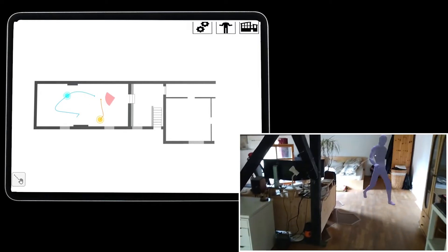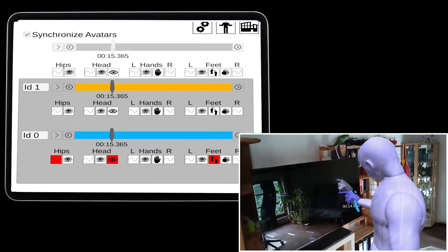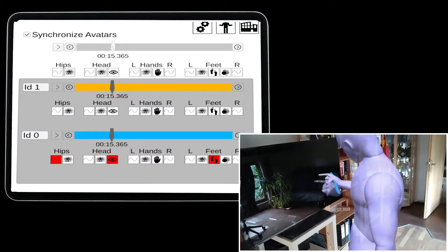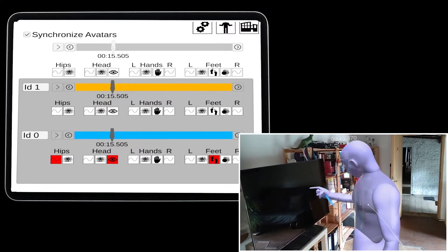A lasso selection allows selection of specific avatars, thereby filtering the data. Through the control view, the current playback time for individual avatars can be manipulated, and specific visualizations or avatars can be toggled on or off.